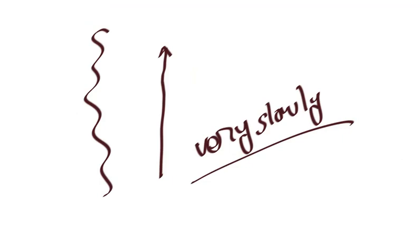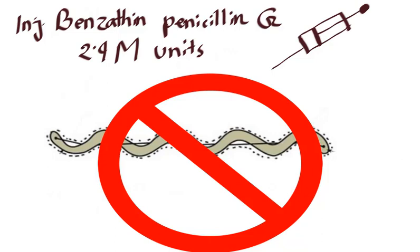Treponema pallidum grows very slowly in the body. This is important because the antibiotic must be present at an effective level for several weeks to kill the organism and cure the disease. To kill Treponema pallidum, a single injection of benzathine penicillin G 2.4 million units is used, because penicillin is released very slowly from the depot preparation, thus maintaining bactericidal concentration for weeks.